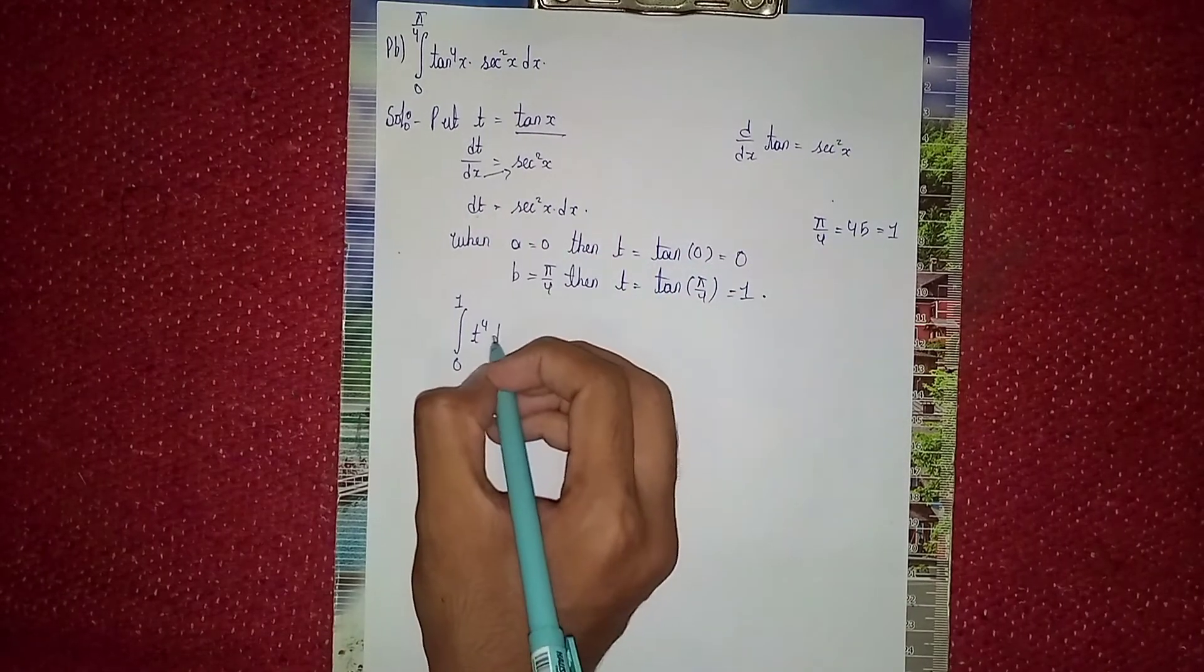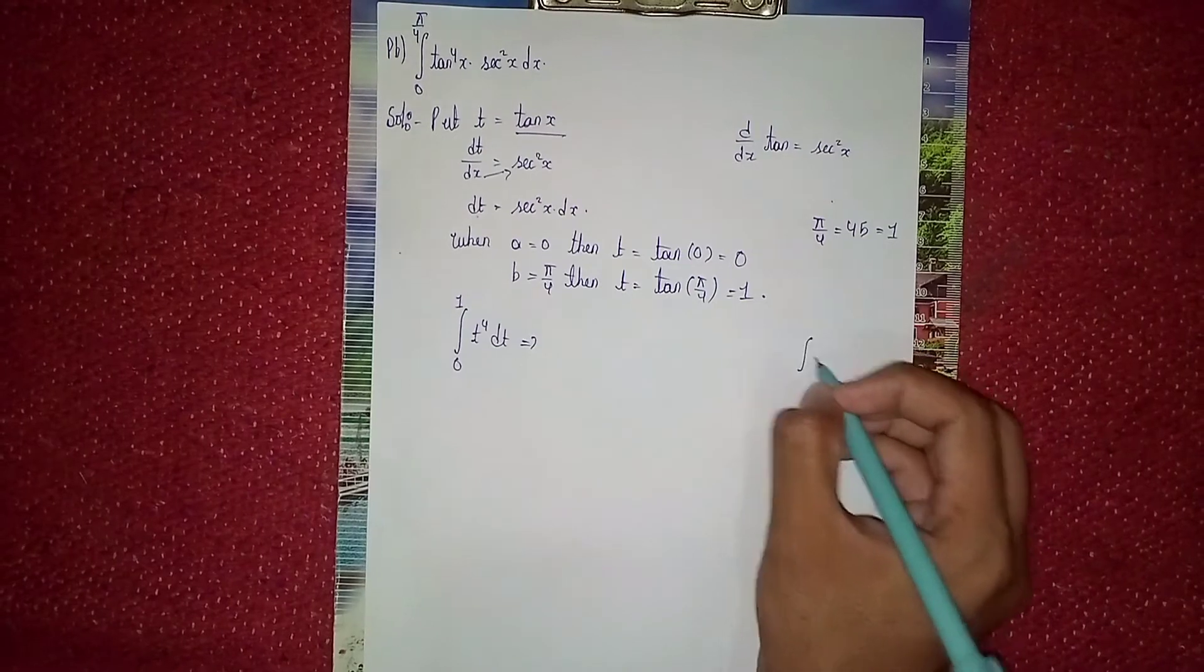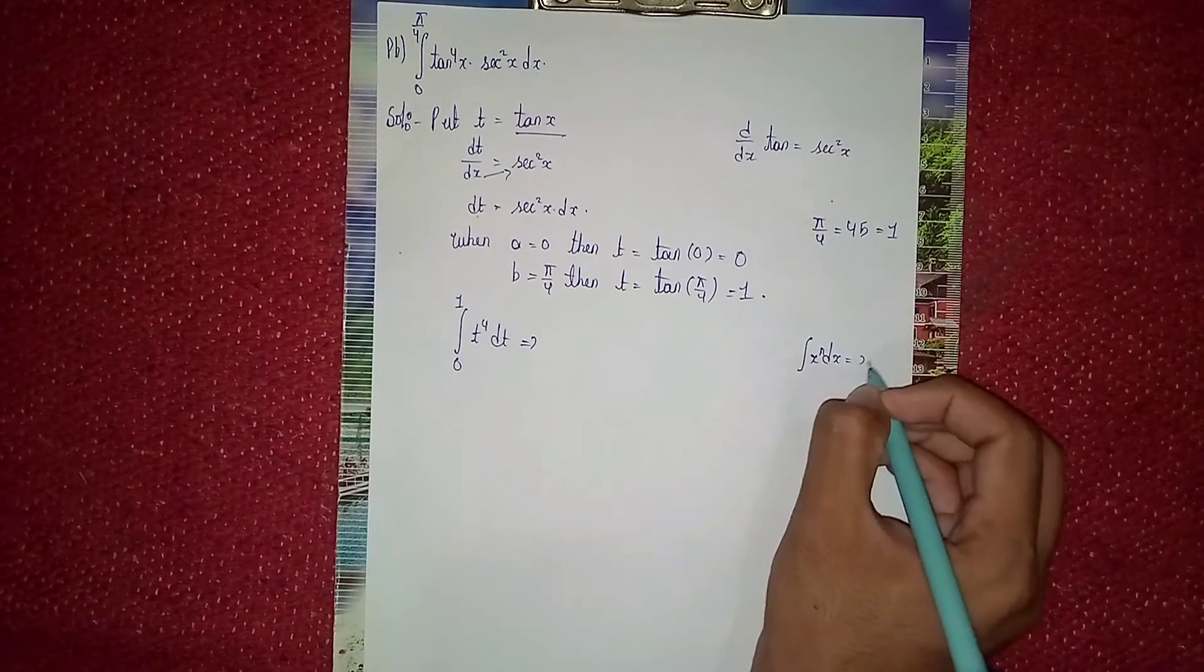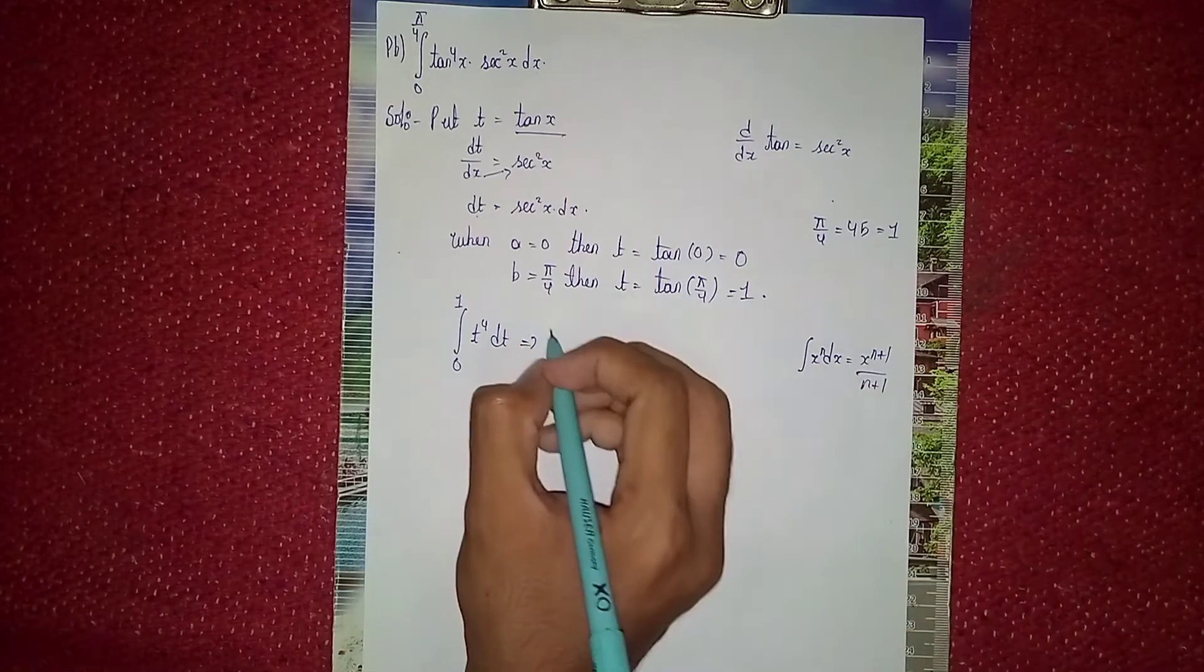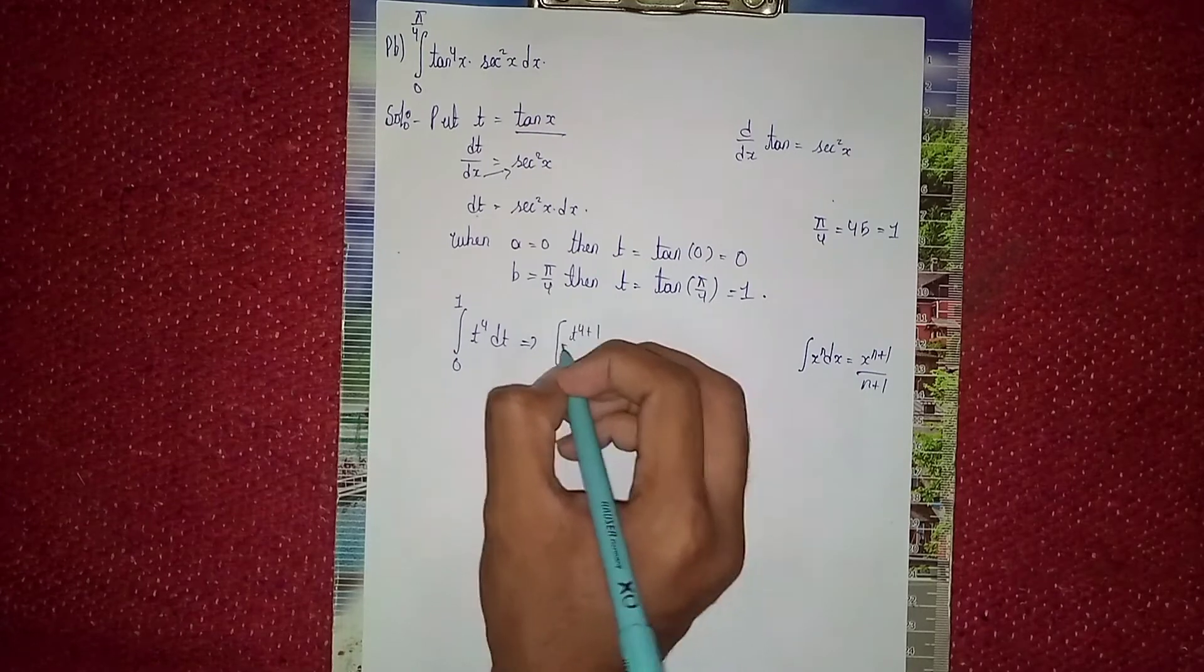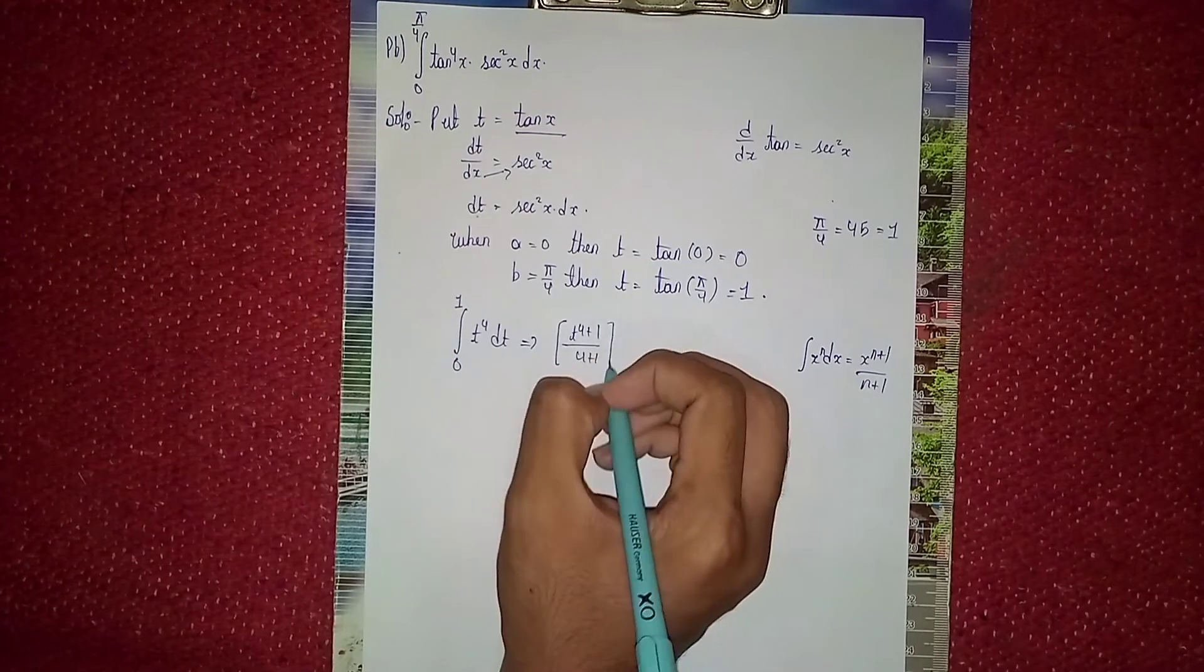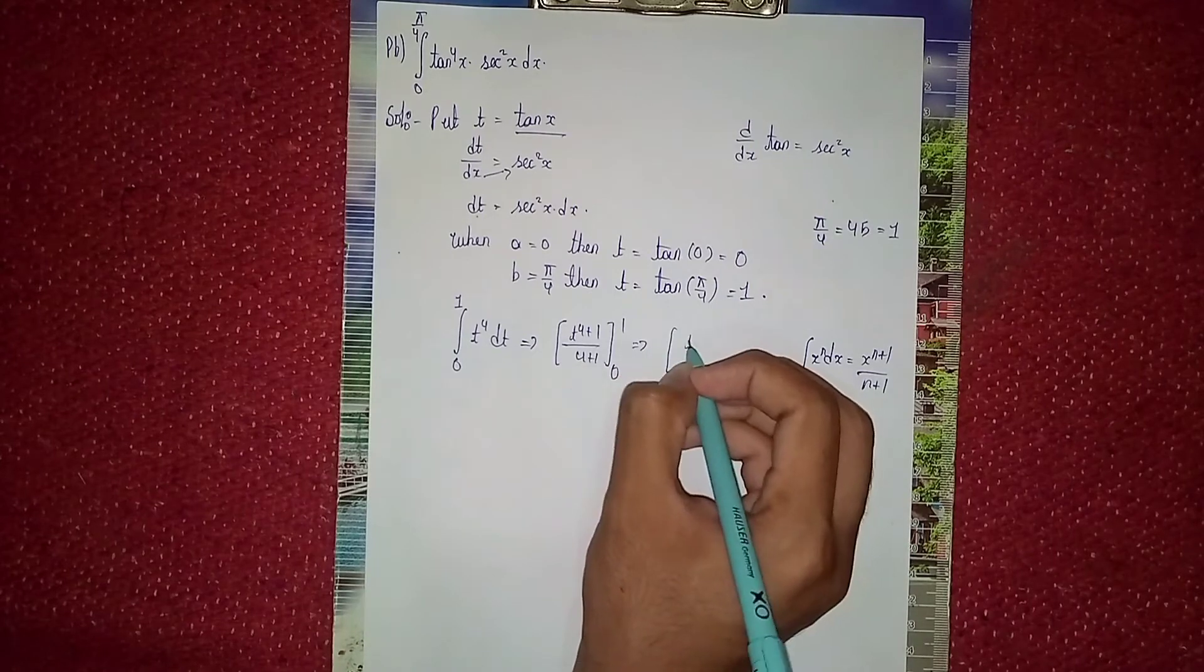Integrate it using the formula: integrate x^n dx equals x^(n+1)/(n+1). So it becomes t^(4+1)/(4+1), which is t^5/5 with limits 1 and 0.